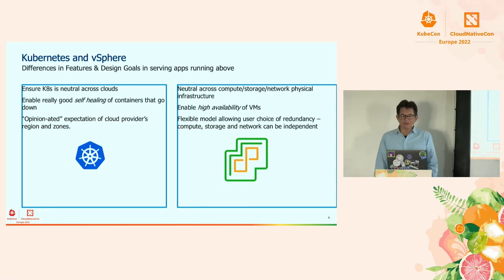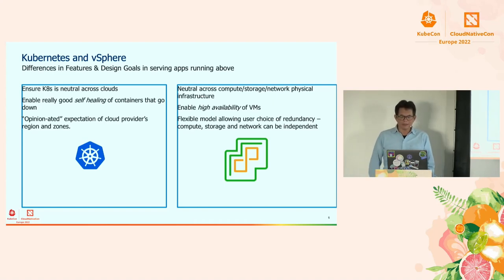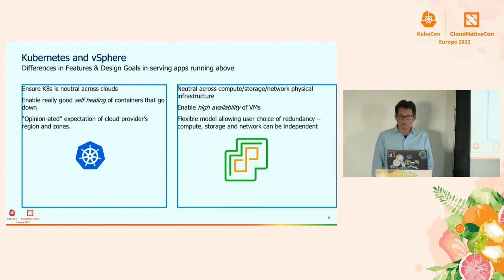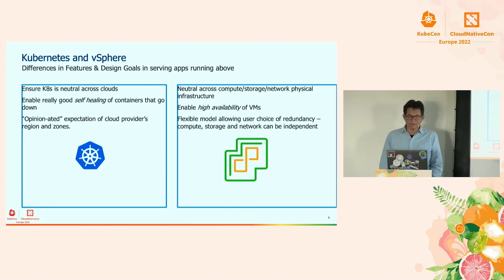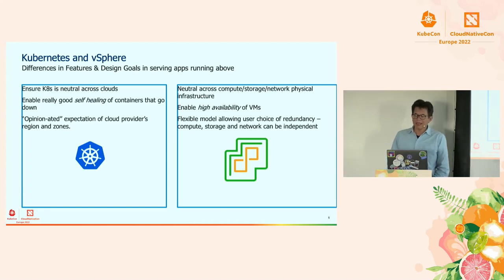vSphere is designed to allow VMs to opt into a high availability model that rigorously attempts to defend workloads from going down. The Kubernetes model is more tuned to an expectation that a workload has an architecture that allows for individual components and containers to go down while still maintaining an acceptable level of service. There are classes of applications better suited to the vSphere model, others better suited to the Kubernetes model.